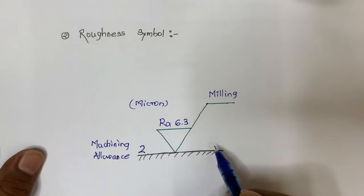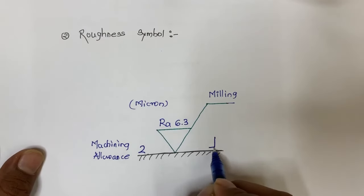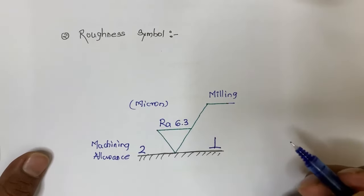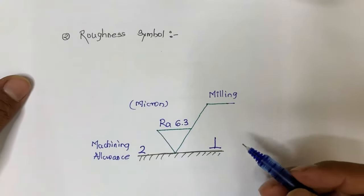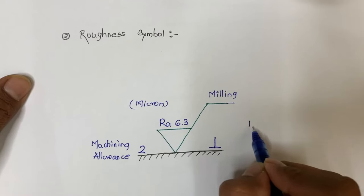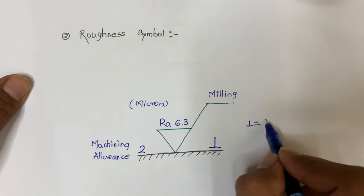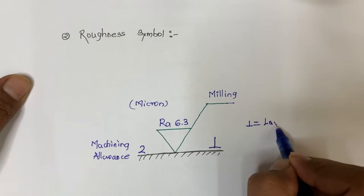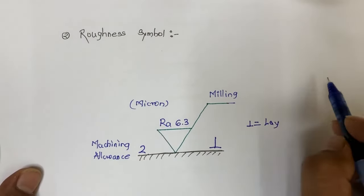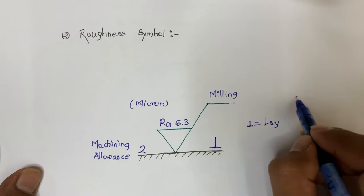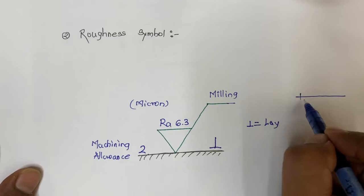On the right side of the symbol we get the lay direction. There are different notations for lay direction. If the perpendicular notation is given, it means the lay is perpendicular to the surface. For example, if you are considering a surface, the lay directions would run perpendicular to that surface.